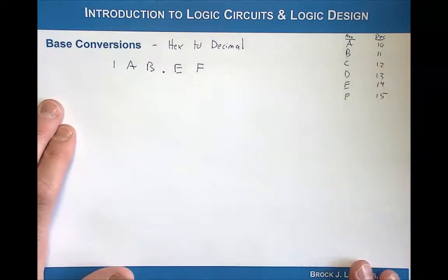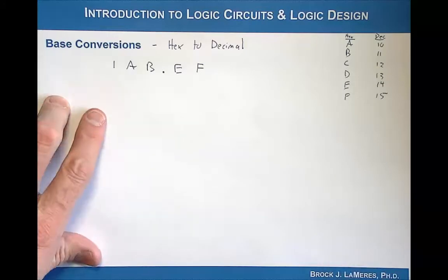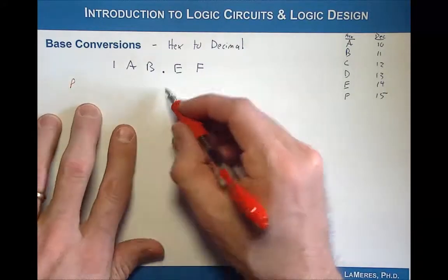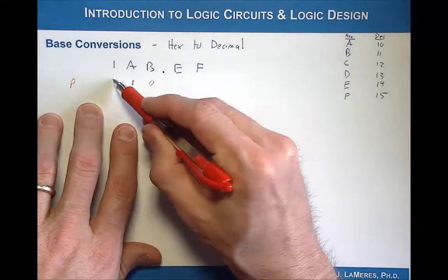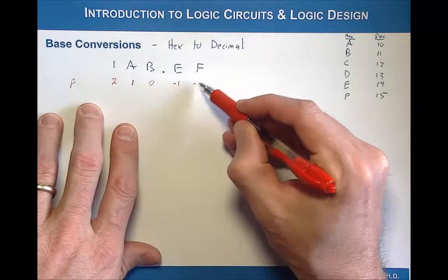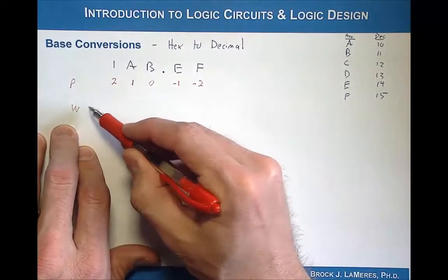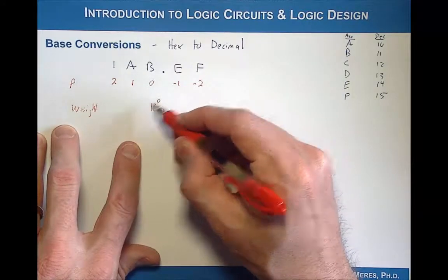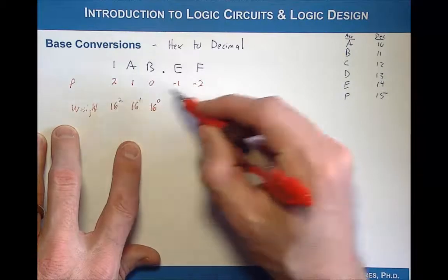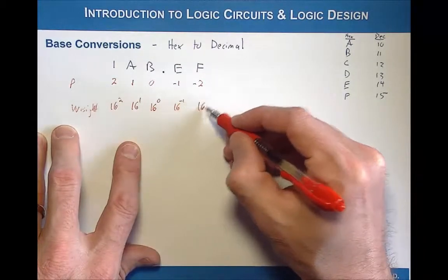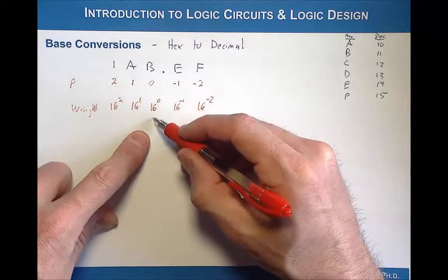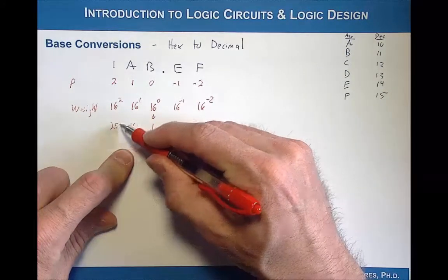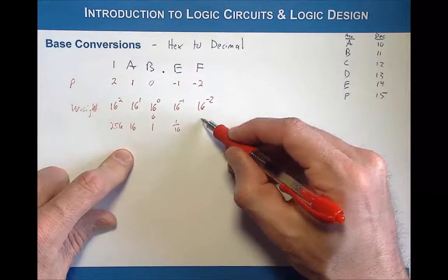Starting with the positions: position 0 is the immediate left of the radix point, then position 1 and position 2 to the left, and position negative 1 and negative 2 to the right. The weights are radix 16 raised to each position: 16 to the 0 equals 1, 16 to the 1 equals 16, 16 to the 2 equals 256, and then 16 to the negative 1 equals 1 over 16, and 16 to the negative 2 equals 1 over 256.